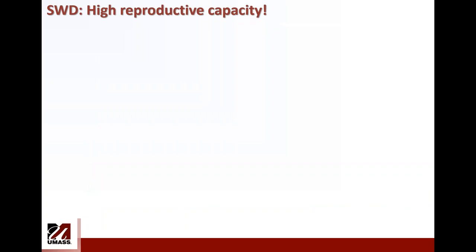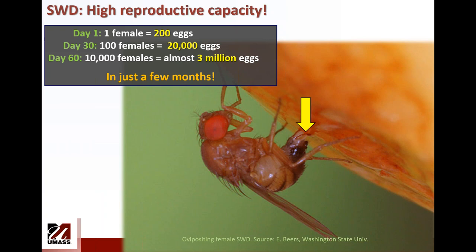This slide highlights the high reproductive capacity of this pest. In just three or four generations, you can go from very few individuals to hundreds of thousands, because females can lay up to 200 eggs in one month. From those 200 eggs, half of the hatching larvae will be females, and so on. This is in the absence of any mortality factors — it won't really happen in nature — but there is the potential to have thousands and thousands of flies.